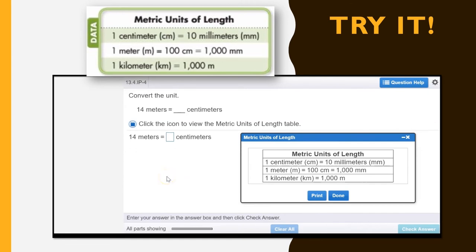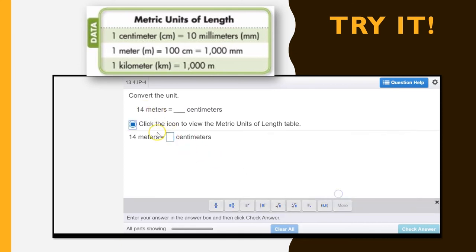So we can use our table as a reference. What two units are we looking at? And what is the relationship? We have meters and centimeters. One meter equals 100 centimeters. So if we have 14 meters, we can multiply 14 times 100. That will give us 14 times 100, 1,400.